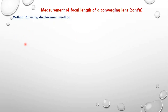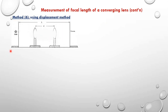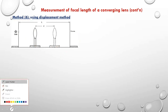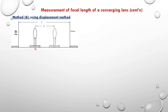In this method, we need a screen, we need the converging lens whose focal length we require, and then we shall also need an illuminated object. This is the illuminated object, this is the screen, and then this is the lens. We shall call one position A and then call another position B.